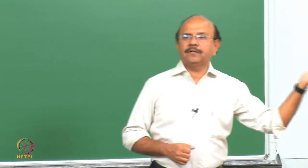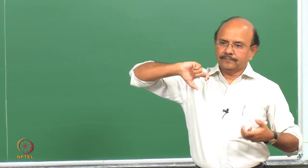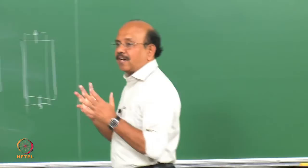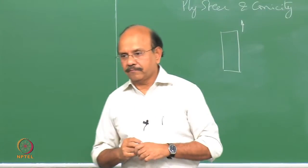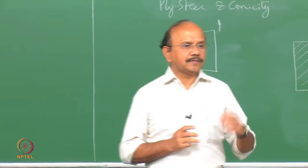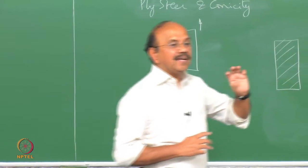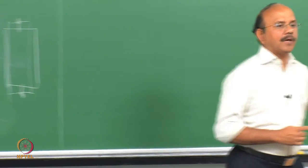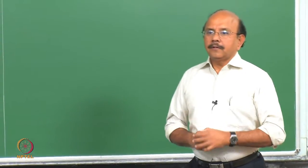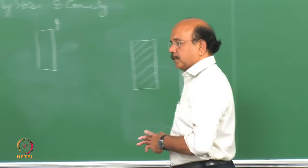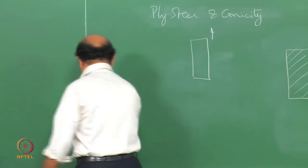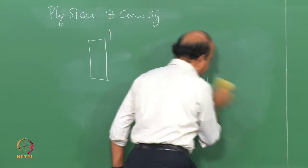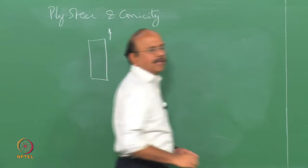If the reinforcement were running in another direction, it would twist the other way. These are called coupling stiffnesses — a coupling between what happens in one plane to another plane. To explain this, we need to go into some details of laminate theory, not to explain the full theory but to understand why this causes what is called ply steer.